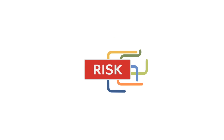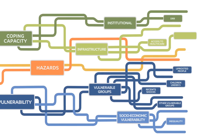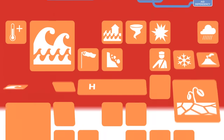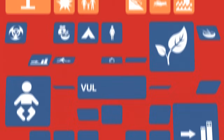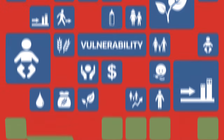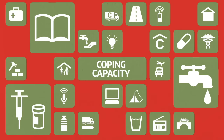INFORM simplifies a lot of information about risk. It uses 50 different indicators to measure hazards and people's exposure to them, including all the main types of natural and human hazards, vulnerability, and the resources available to help people cope.